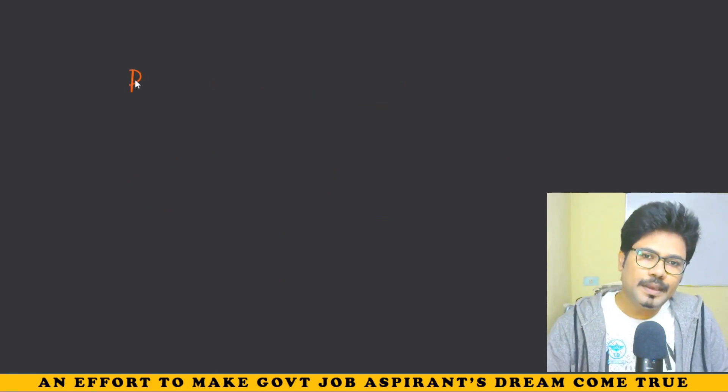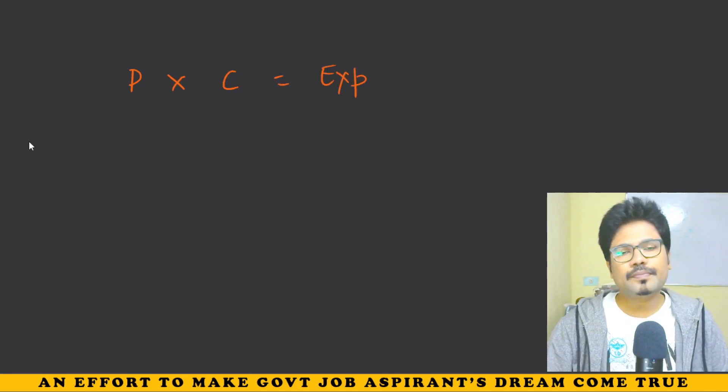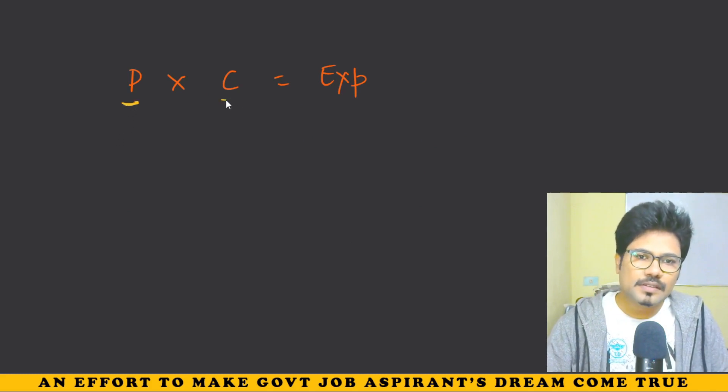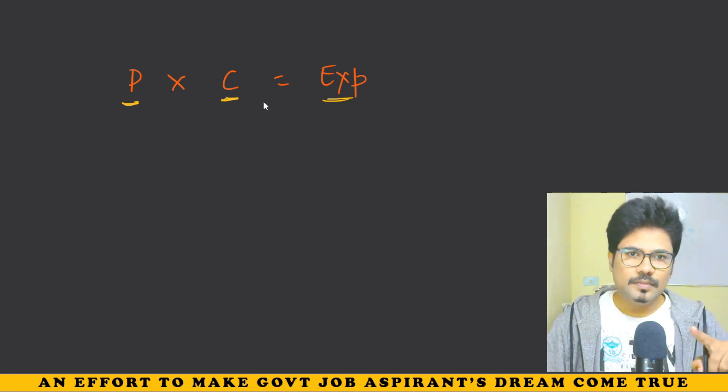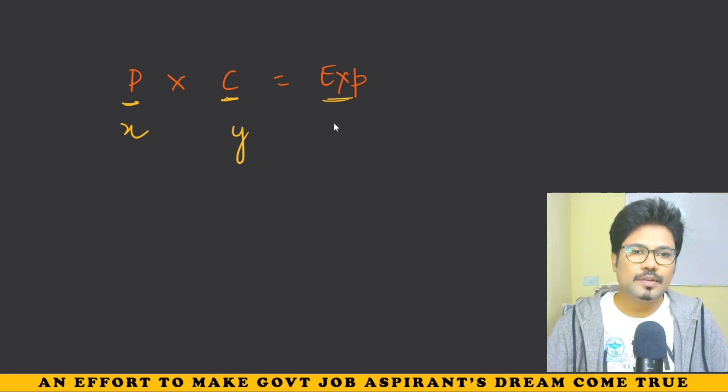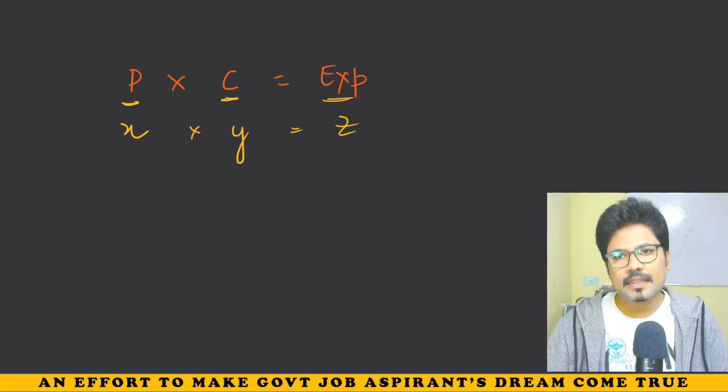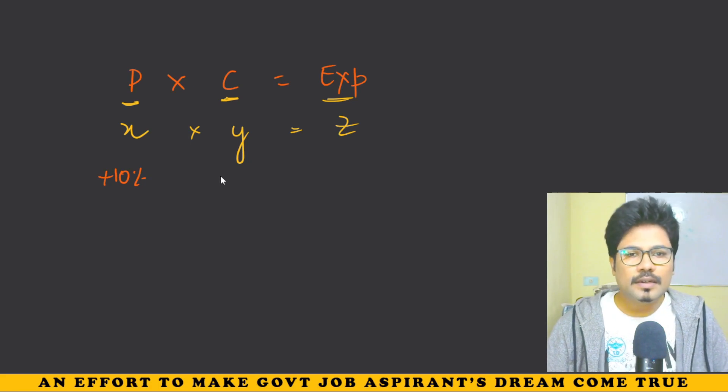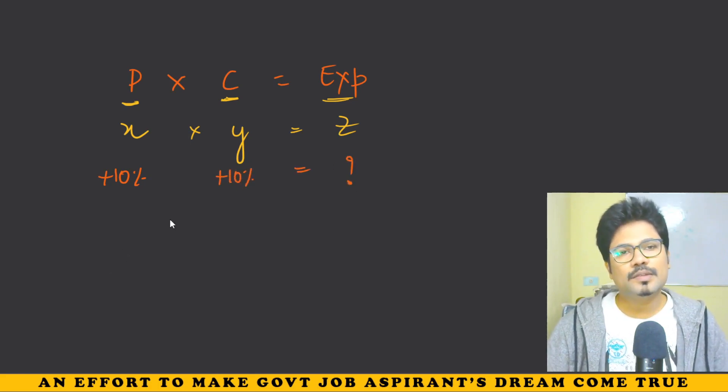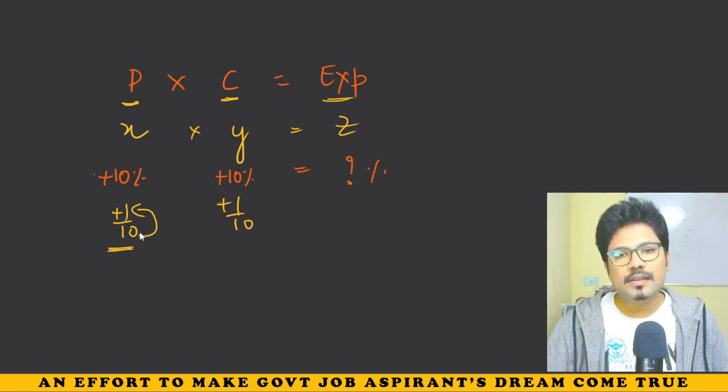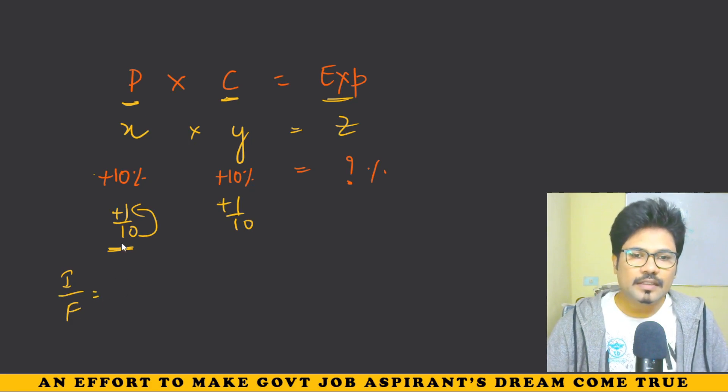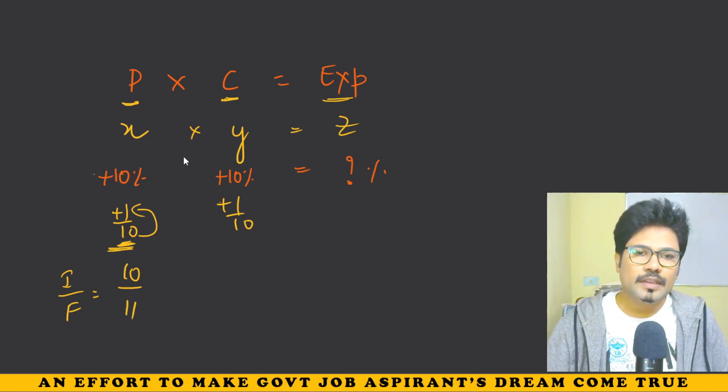This is basic. Now P into C is equal to expenditure. Let's do this. Suppose price is P, consumption is C, expenditure is E rupees. Now what will happen is, suppose this price increases 10%, which is plus 1 by 10. This means if it was 10 rupees, now it becomes 11 rupees. So initial to final, initial was 10 rupees, it increased to final 11.